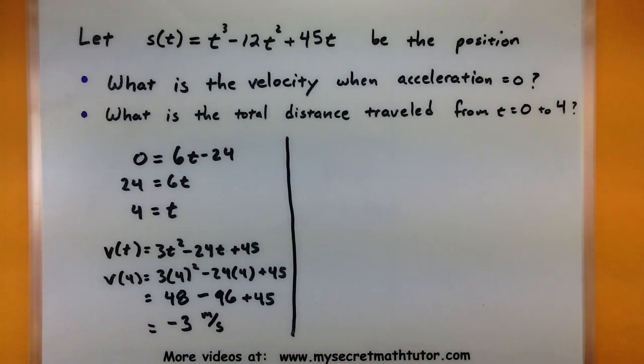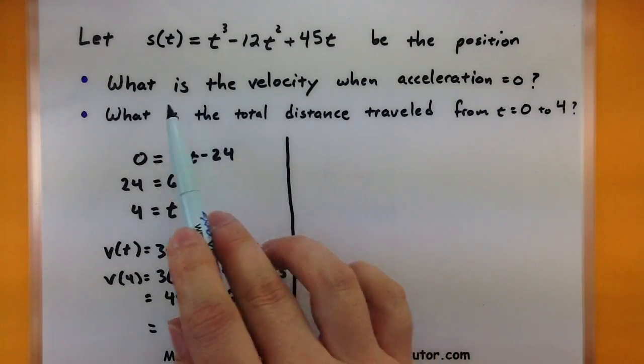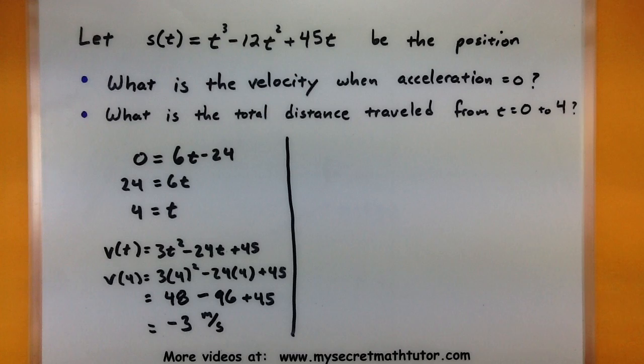What is the total distance traveled from t equals zero to four? Now at first glance, it looks like this one is simply talking about the position of the particle. Where is its position after zero seconds and where is its position after four seconds?